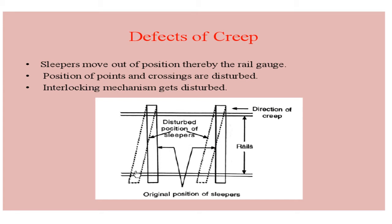If this happens, alignment problems come, gauge problems come, and the interlocking mechanism gets disturbed. Not only that, the points and crossings are getting disturbed. Points and crossings means it is the junction where a track is getting diverted from another, so there also problems will occur.